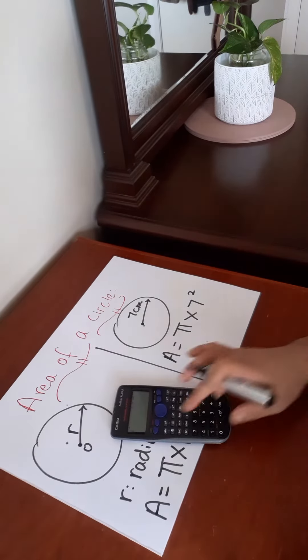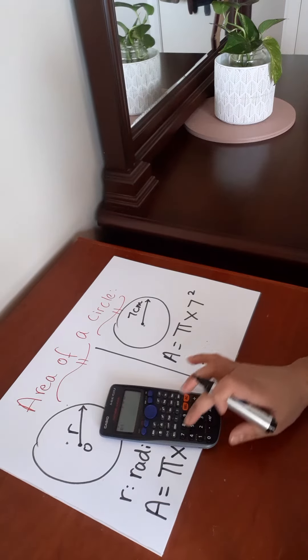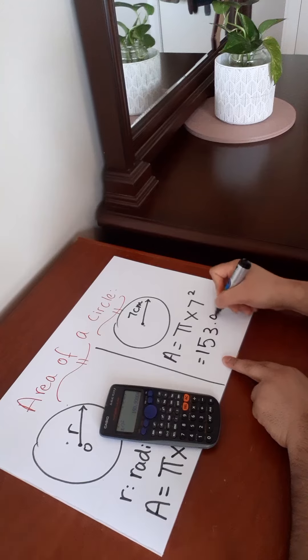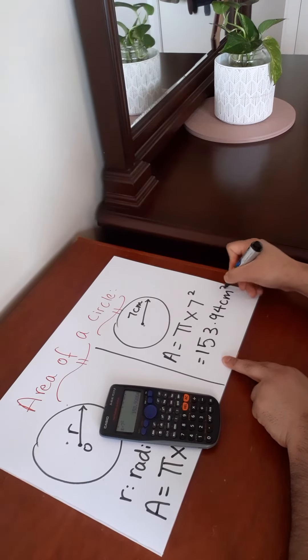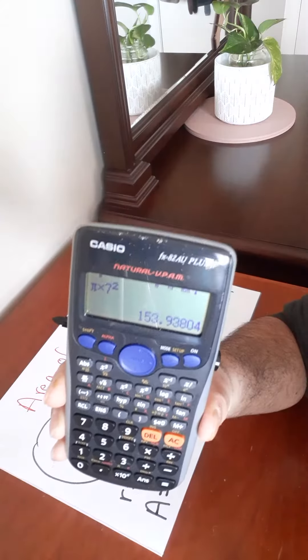So we take our calculator out. Shift times 10x button to get pi times 7 squared. 153.94 centimeters squared. That is the area of the circle with a radius of 7 centimeters.